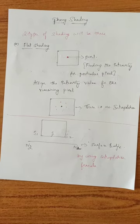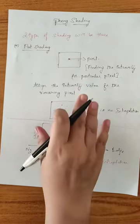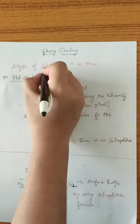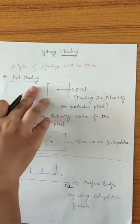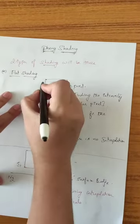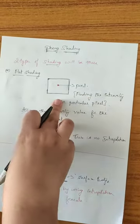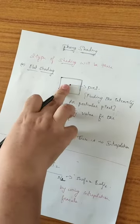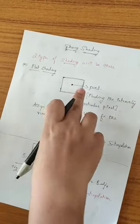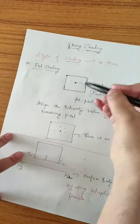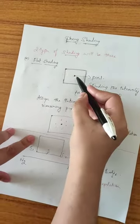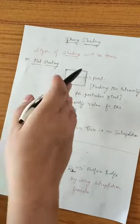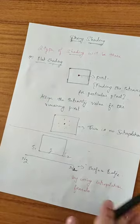In today's session I'm going to cover Phong shading. There are two types of shading. The first one is flat shading. Consider a surface — we find the intensity for one particular pixel, then assign that intensity value to the remaining pixels. So based on one pixel's intensity we determine the remaining pixels' intensity. That shading is called flat shading, and in flat shading there is no interpolation.